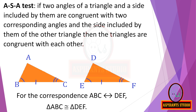Once again: if two angles of a triangle and the side included by them are congruent with two corresponding angles and the side included by them of the other triangle, then the triangles are congruent with each other. For the correspondence ABC corresponding to DEF, triangle ABC is congruent to triangle DEF. You should be able to do this for all six correspondences of the vertices. According to the correspondence of the vertices only, we can write the remaining parts of the triangle which are congruent.